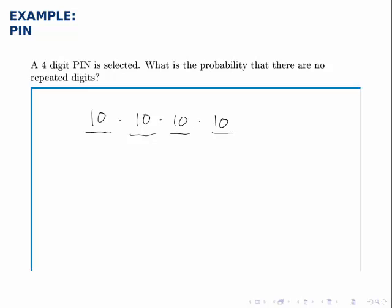Therefore, multiplying them together, we get ten thousand total possibilities for what PIN you could select. There are ten thousand ways to select a PIN.